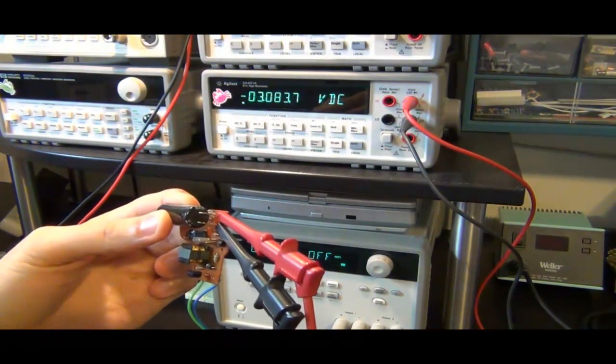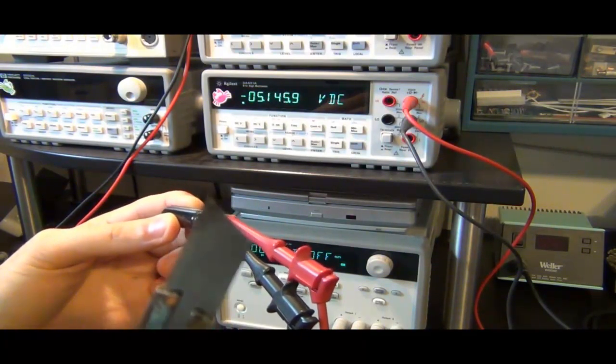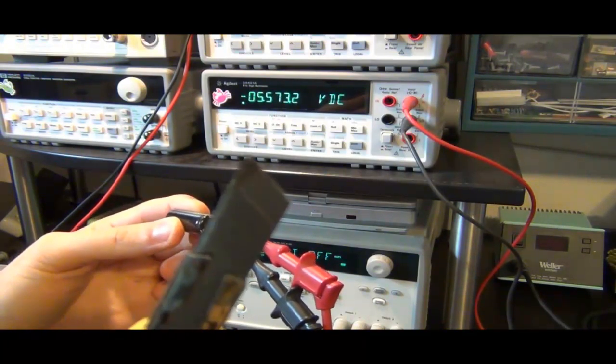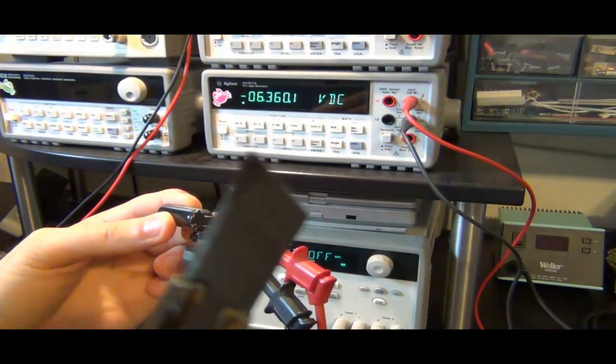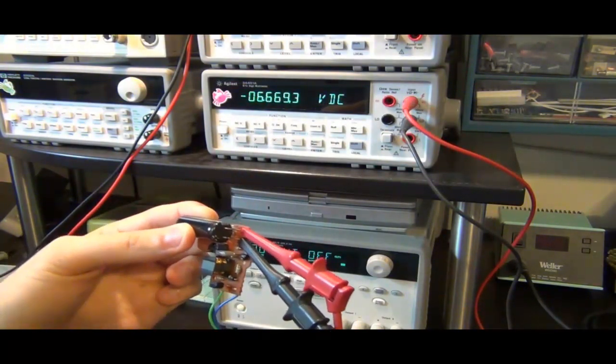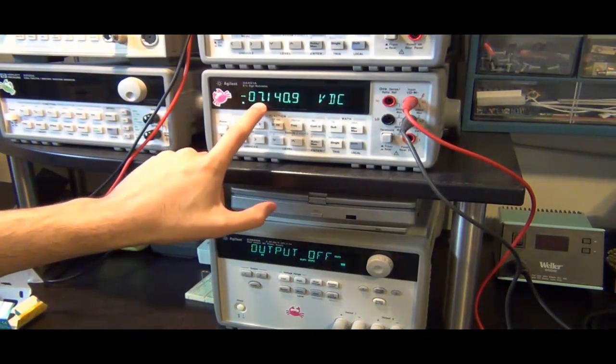So that was the entire charge in the capacitor going through the short-circuit tip of this. You can see it actually damaged the tip of my X-Acto knife here. I don't know if you can focus on this very well. But now you can see that the voltage across the capacitor went down all the way to about minus 7 volts.